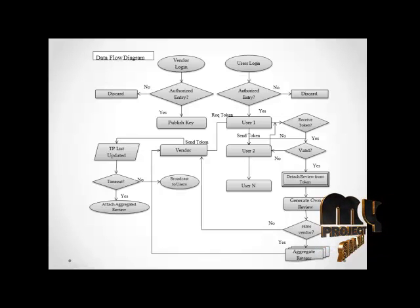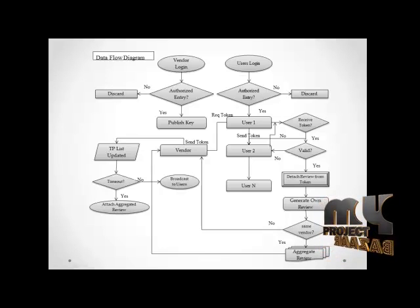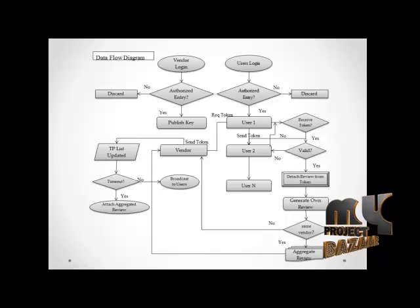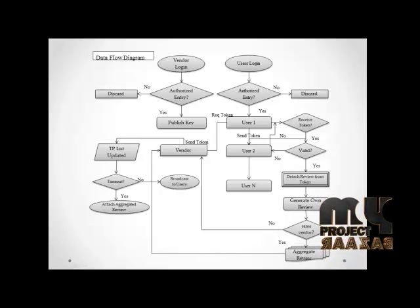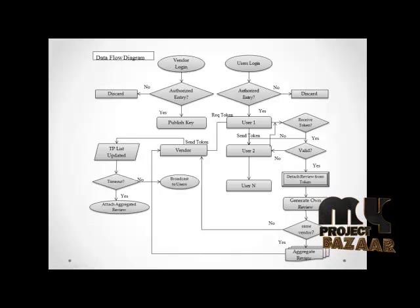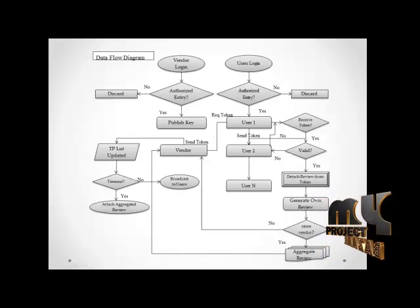After the successful submission of the first user's service review, he just passes his token to the second user when the second user asks for a token request. Using that second token, the second user can also generate his own review and those reviews can be aggregated along with the first user's review if going to the same vendor. Those aggregated reviews are sent to the vendor again and the timestamp process validation will be repeated. At last, the valid token users' service review can only be decrypted and published to the users. Other timeout token users' reviews cannot be published or decrypted anymore.